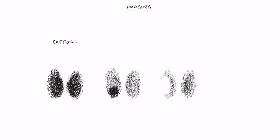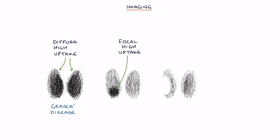Diffuse high uptake is found in Graves' disease. Focal high uptake is found in toxic nodules of the thyroid gland. And cold areas, which have abnormally low uptake, can indicate thyroid cancer.